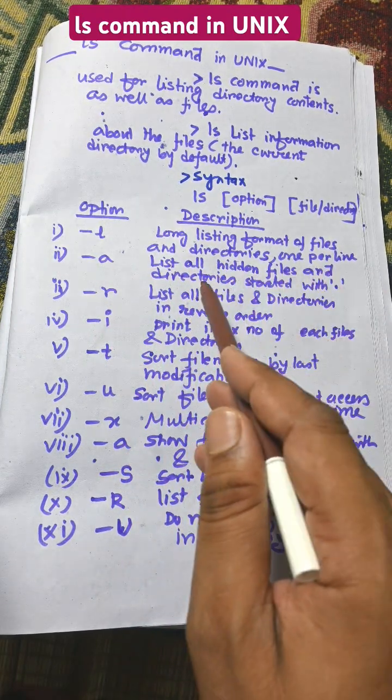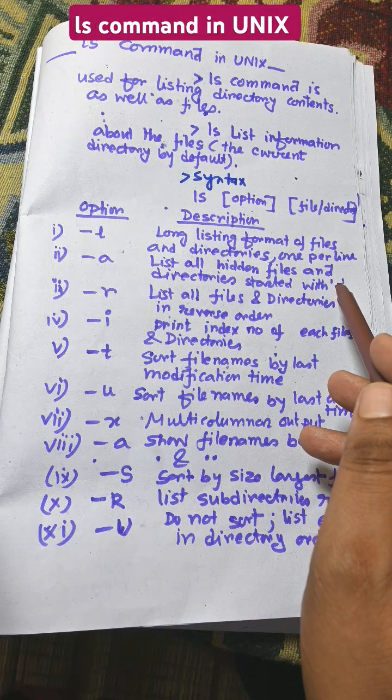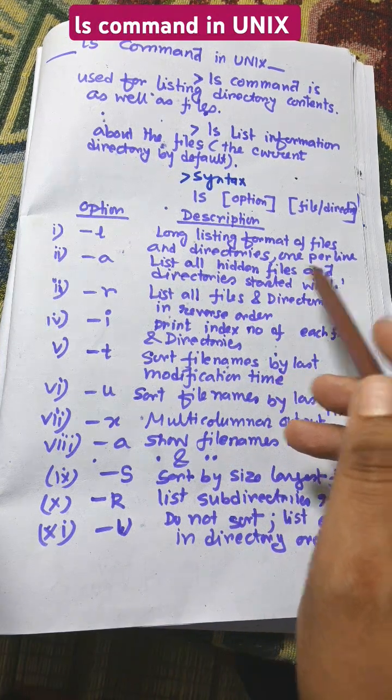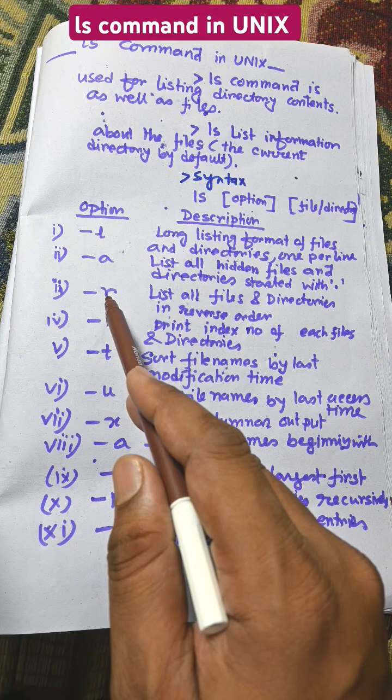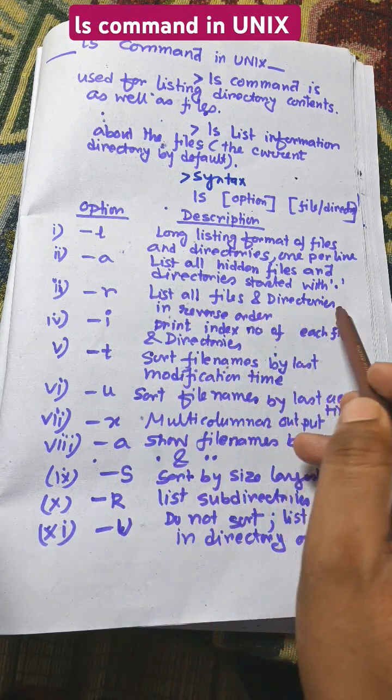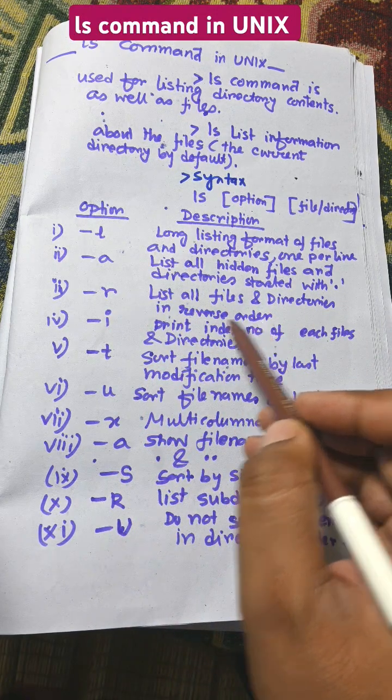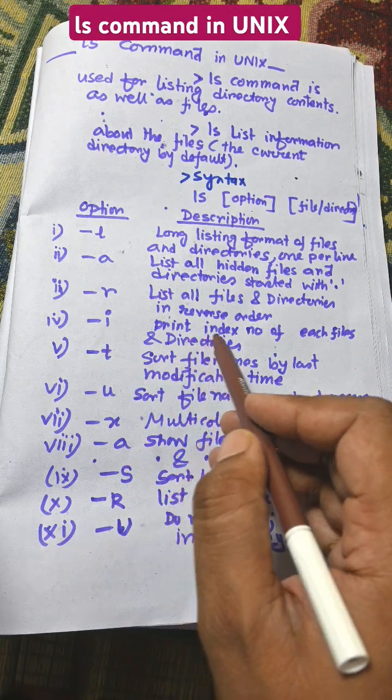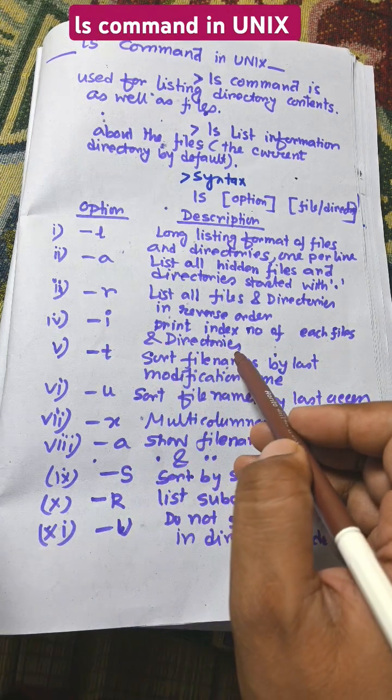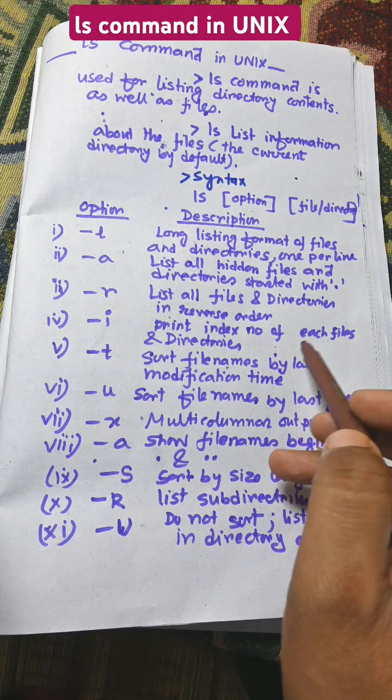ls hyphen r means list all files and directories in reverse order. ls hyphen i will print inode number for each file and directory.